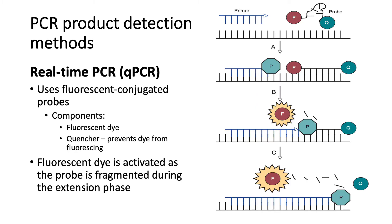Next, we have real-time PCR, otherwise known as qPCR or quantitative PCR. This uses fluorescent-conjugated probes, which have a fluorescent dye and a quencher — a substance that prevents the dye from fluorescing. The fluorescent dye is activated as the probe is fragmented during the extension phase. The probe attaches to the target DNA sequence ahead of the primer, and as DNA polymerase synthesizes new strands it reaches this probe, fragments it, and separates the fluorescent dye from the quencher. This separation allows the fluorescent dye to fluoresce, and this can be detected using our machines.